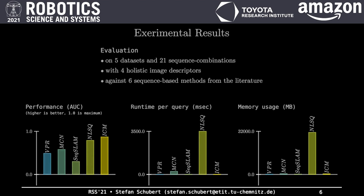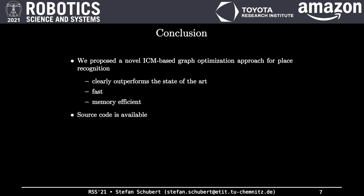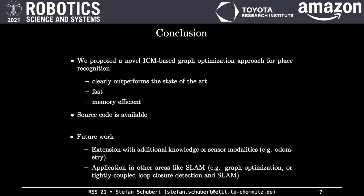In conclusion, we proposed a novel ICM-based graph optimization method for place recognition that clearly outperforms the state-of-the-art while being fast and memory efficient. Corresponding source code is provided. In future work, our approach could be extended by new factor types for additional knowledge and sensor modalities like odometry. Another direction is an application in other areas like SLAM, for example for graph optimization or tightly coupled loop closure detection and SLAM.